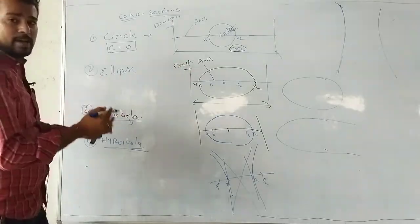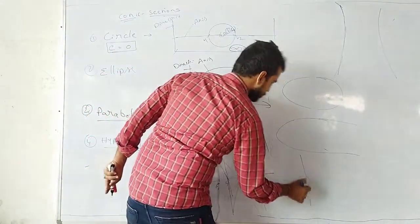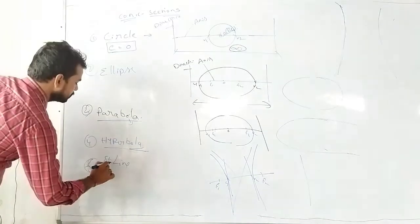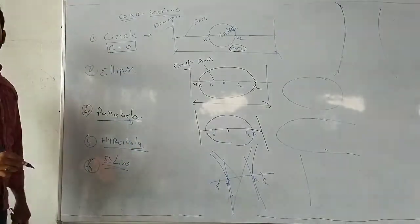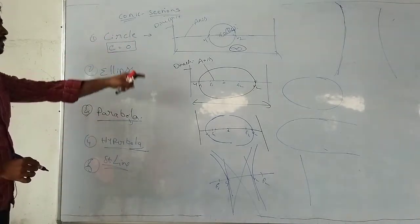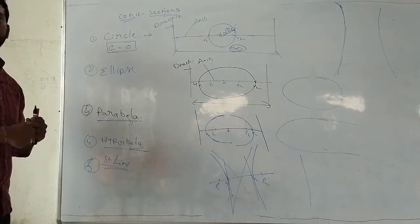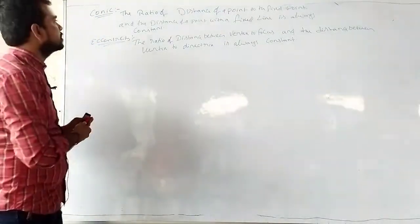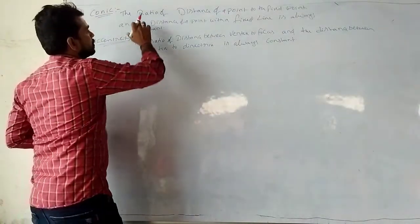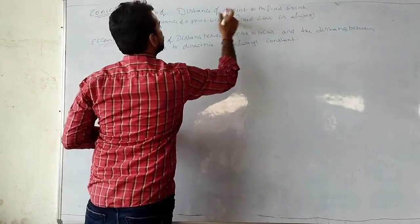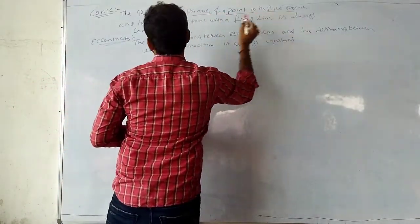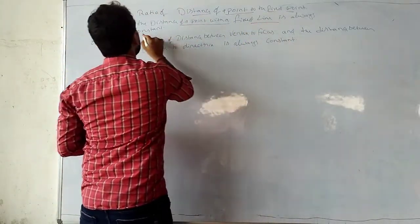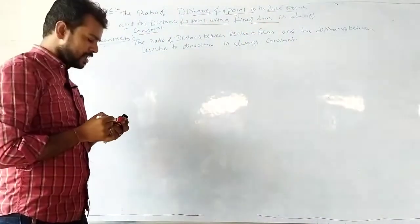If the directrices came more close and coincide with each other, then you get a straight line. A conic is defined as the ratio of the distance of a point to a fixed point, and the distance of a point to a fixed line, which should always be constant.